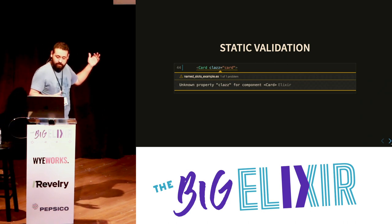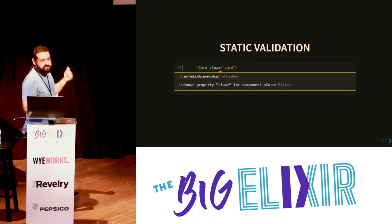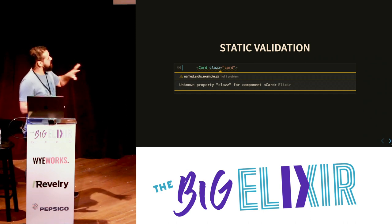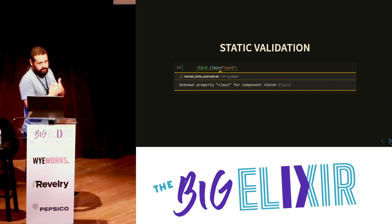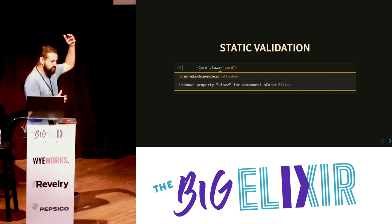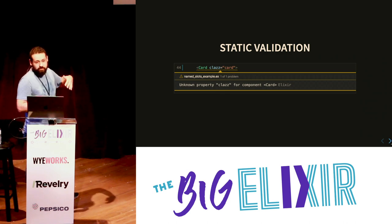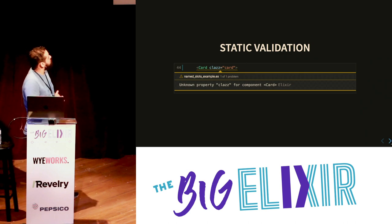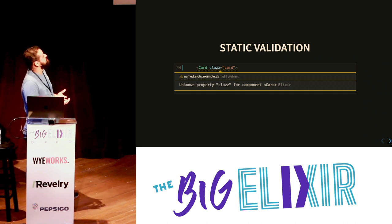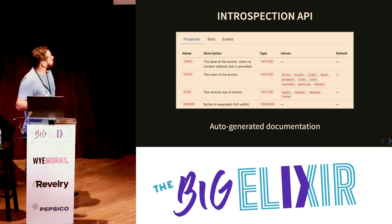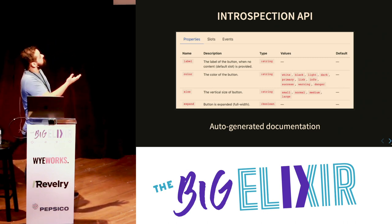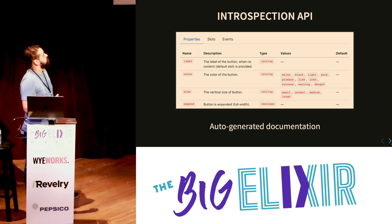Some of the benefits of having this model: we had static validation for the syntax, but once you combine that with the declarative API, you can start crossing that information — the validated structure information and the introspected component information — to provide semantic validation. So if I define my list of properties and I try to pass an attribute that doesn't exist, the compiler will tell me there's no such property. Another benefit is introspecting information from components so you can generate documentation automatically.